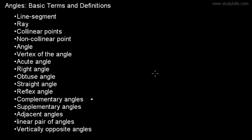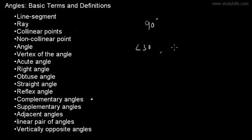Complementary angles: if the sum of two angles is 90 degrees, they are called complementary angles. For example, if one angle is 30 degrees and another angle is 60 degrees, they are called complementary angles.